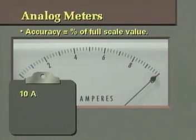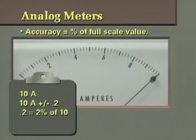If we have a full-scale reading of 10 amps, however, an accuracy of plus or minus 0.2 means that the actual value can only vary up to 2 percent from the reading.